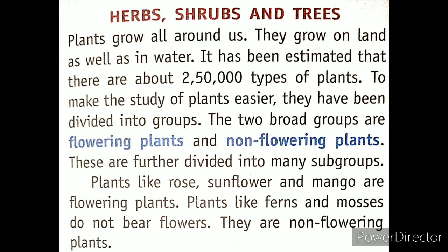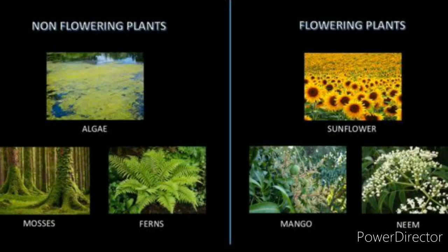We have divided plants into two broad categories: flowering plants and non-flowering plants. Flowering plants are those that have flowers on them, and non-flowering plants are those that do not bear any flower. For example, rose, sunflower, and mango are flowering plants, while ferns and mosses do not bear flowers — they are non-flowering plants.